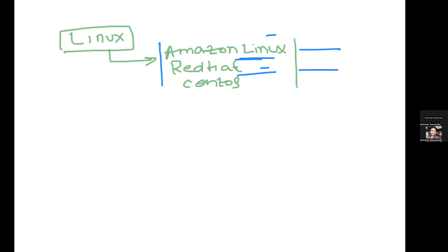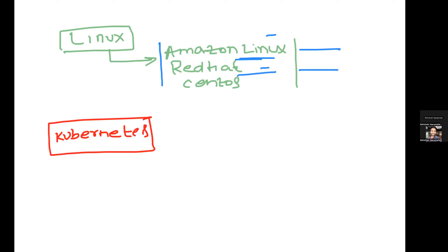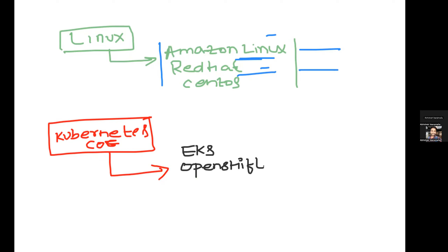Similarly, Kubernetes is an open-source container orchestration solution. What people have done is built software and distributions on top of Kubernetes. For example, Amazon has its own managed Kubernetes service called EKS; Red Hat came up with their distribution called OpenShift; VMware has Tanzu; and Rancher Labs created something called Rancher. All of these are distributions of Kubernetes.